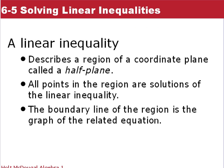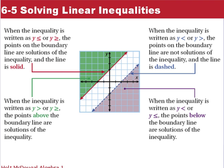A linear inequality describes a region on a coordinate plane, and all points in the region are solutions. We'll be looking at shading. One important term is the boundary line. When we've graphed equations, lines have been solid. With an inequality, we'll have either a solid or dashed boundary line. When the inequality is less than or equal to, or greater than or equal to, the points on the line are part of the solution — solid line. When it's strictly less than or greater than, we use a dashed line. Shading is above the line for greater than, and below for less than.